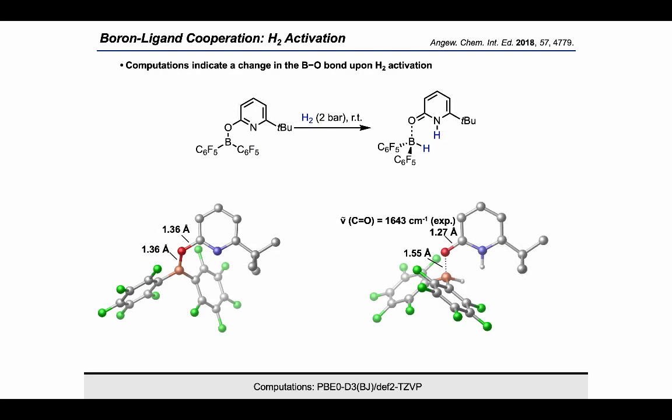We were interested in the change of the BO bonding mode during hydrogen activation. According to our DFT computations with the dispersion-corrected hybrid functional, the hydrogen activation of the pyridonate borane is associated with an elongation of the boron-oxygen bond. At the same time, the CO bond shortens. The value we find after hydrogen activation is typical for a CO double bond indicating the formation of a pyridone. This interpretation is further supported by the experimentally found CO stretching vibration that is typical for the CO double bond of an amide.